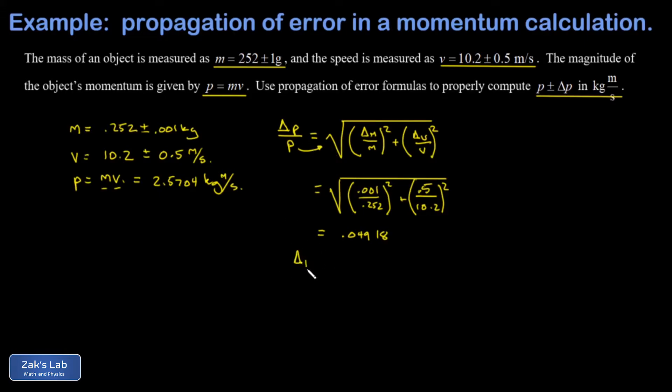So delta p is going to be p times 0.04918. But our momentum p was 2.5704, so we'll put that in: 2.5704 times 0.04918. And this gives me 0.126, and this has units of momentum, so kilogram meters per second. So there's our proper uncertainty.